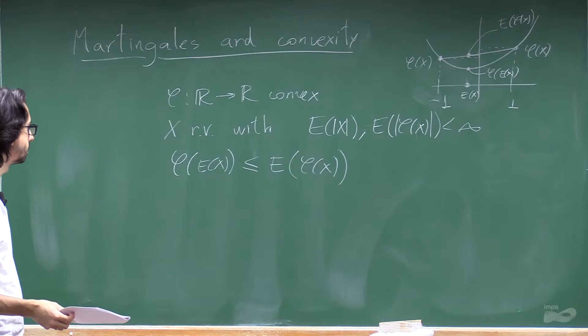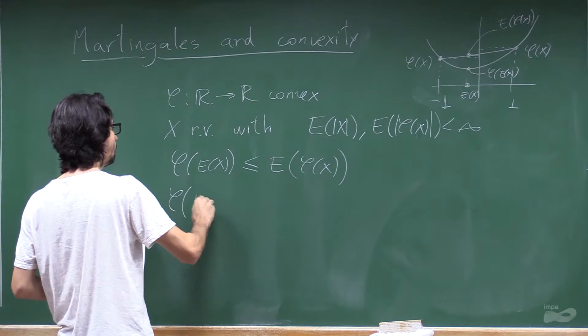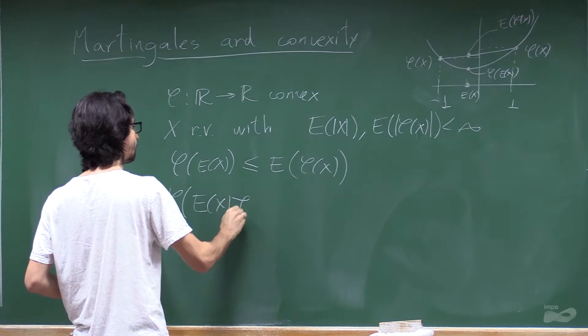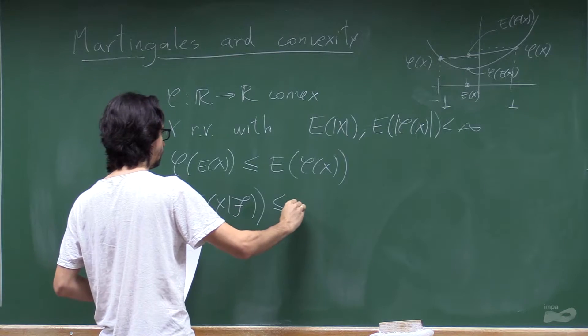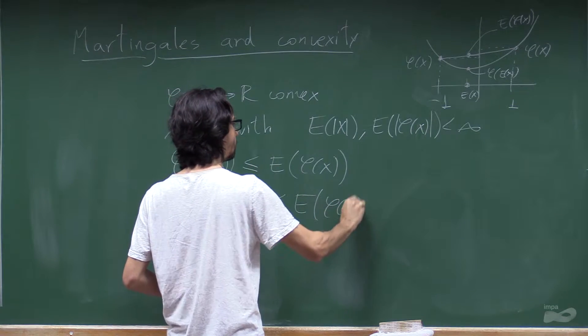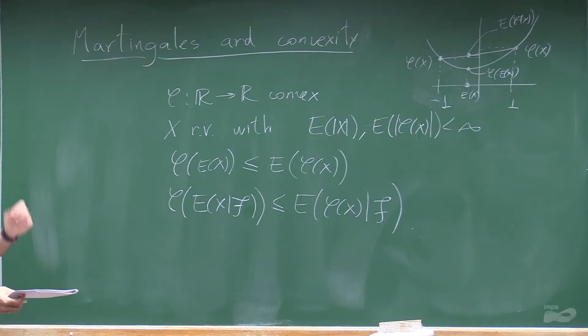Not only that, but the conditional version is also true. Phi of the expectation of x given f is smaller or equal than the expectation of phi of x given f. So these are the normal and conditional version of Jensen's inequality.